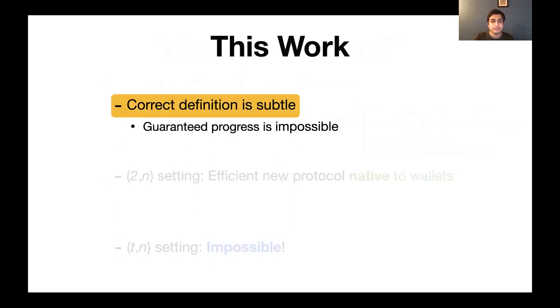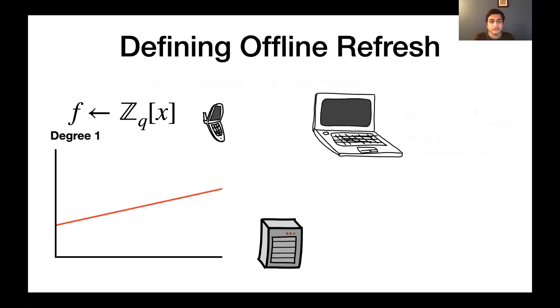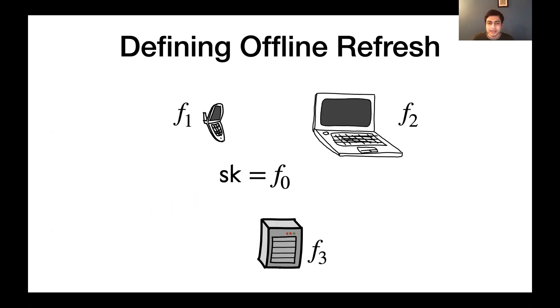Coming to the definition, we know from experience with MPC definitions that when there's a dishonest majority involved, it's impossible to guarantee progress. And so a subtle aspect of defining the right notion is defining how the adversary can fail the protocol. So with some loss of generality, let's assume that we're looking at a system that employs Shamir sharing. That is, we start by choosing a random degree 1 polynomial over Z_q, evaluating it at a bunch of points, and giving each device in the system an evaluation of this polynomial at one point.